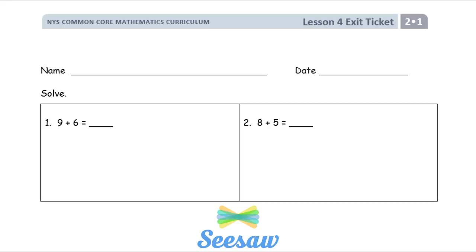Now you're going to do the seesaw problems — there are two for your exit ticket. First, erase everything off your dry erase board or your desk. Then solve the two problems and seesaw your answers to me. After I check it, you are going to do your problem set. Good luck!